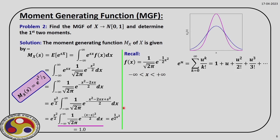Our next step is to find out the first two moments. We expand the moment generating function e^(s²/2). Recalling that e^u = 1 + u + u²/2! + u³/3! + ..., and following that description, expanding this series gives 1 + s²/2 + s⁴/(2² · 2!) + ... So we have the moment generating function expressed as an infinite series.